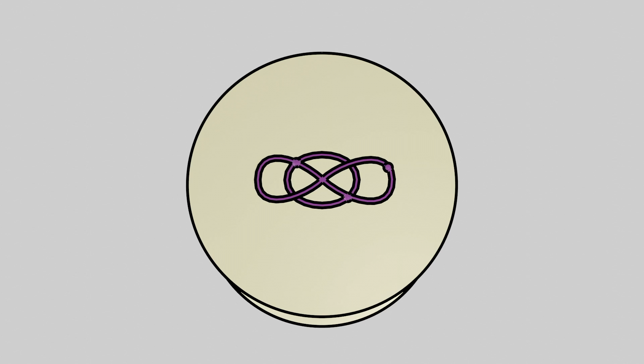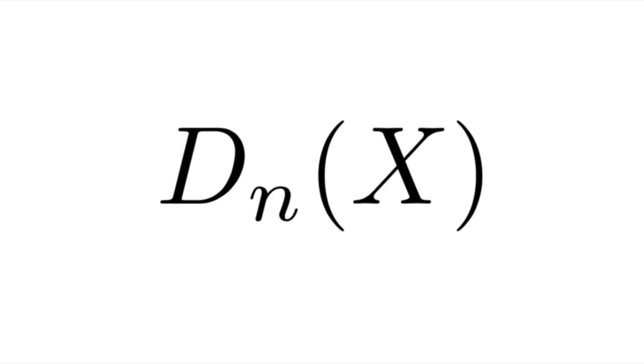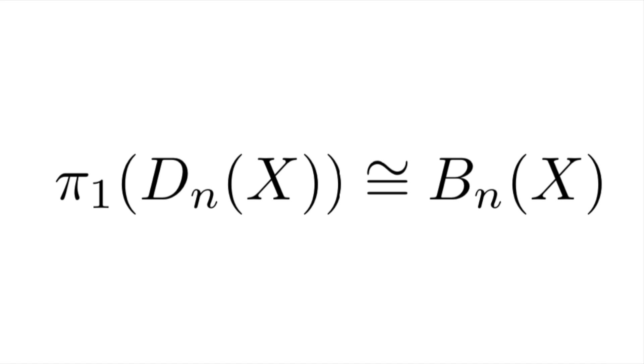In that case, we can get loops that look like this. This is called the unordered configuration space on n points, written like this, Dn of X. And the theorem about braids in that case is this. The fundamental group of an unordered configuration space on n points is the full group of braids on n strands.